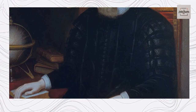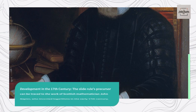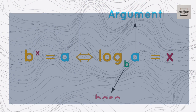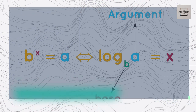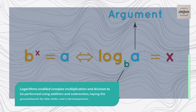Development in the 17th Century: The slide rule's precursor can be traced to the work of Scottish mathematician John Napier, who invented logarithms in the early 17th century. Logarithms enabled complex multiplication and division to be performed using addition and subtraction, laying the groundwork for the slide rule's development.